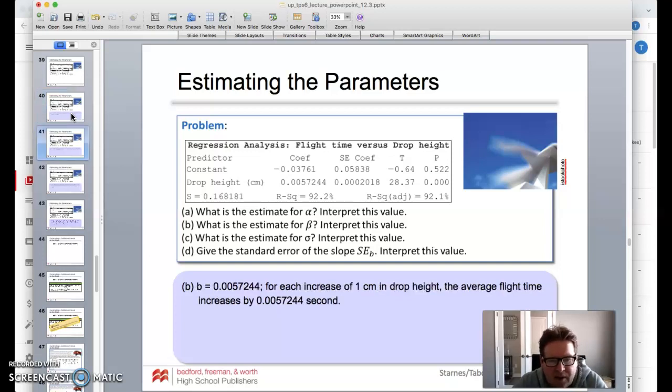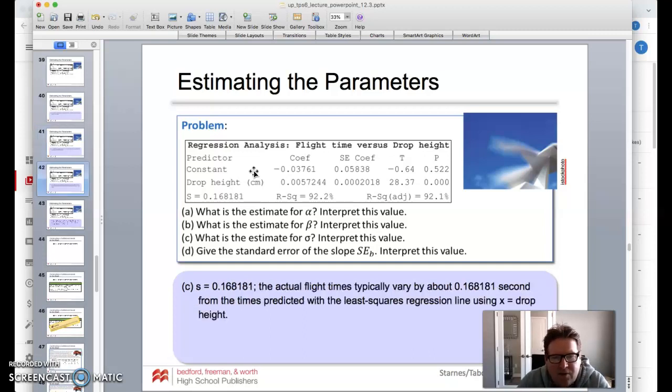The slope is telling us that 0.00574—we can see that from our data right here. It says for each increase of one centimeter drop height, the average flight time increases by that much. And our standard deviation, we have right here. We had that from a different calculation.